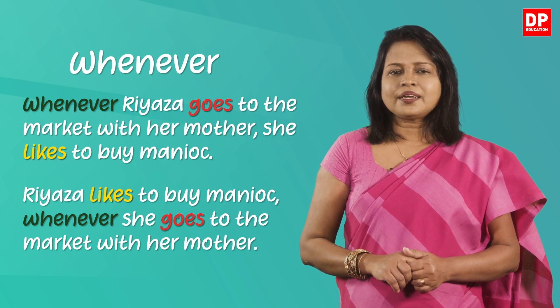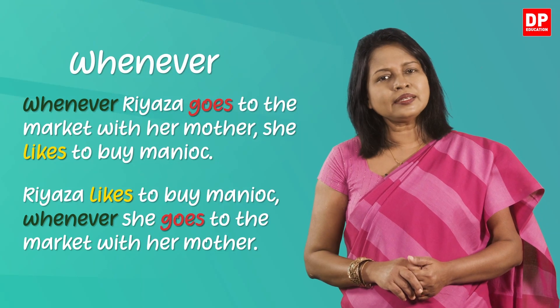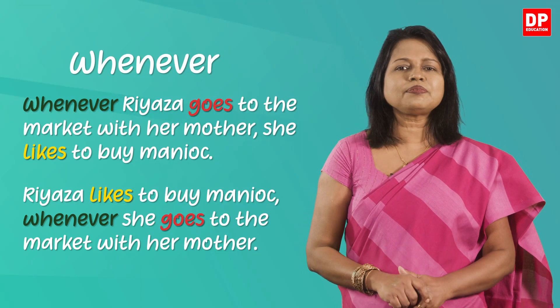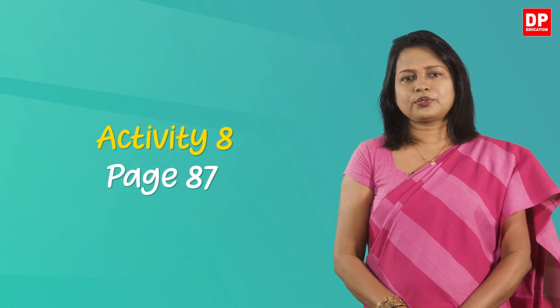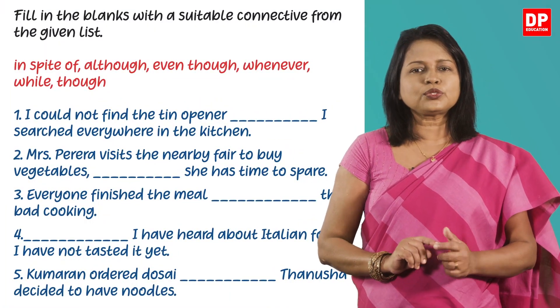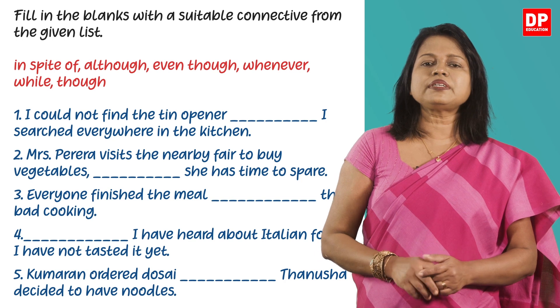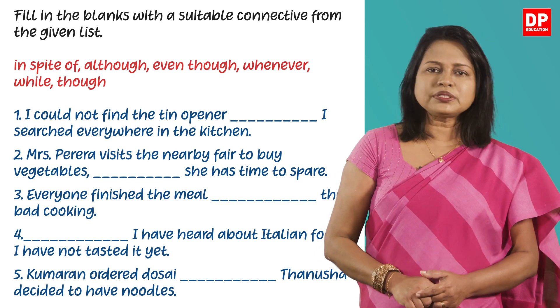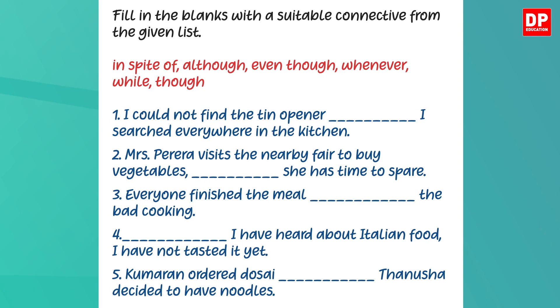I hope you have a clear idea about the six connectives we have learnt today. Now let's do an activity to practice what you have learnt. This is Activity 8 on page 87 of your textbook. You have to fill in the blanks with a suitable connective from the given list. You can pause the video and do it now. Let's see how you have done it.